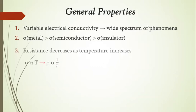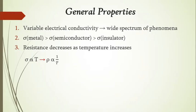The next property is based on resistance. As temperature increases, the resistance of a semiconductor goes on decreasing. Conductivity is directly proportional to temperature, and since resistivity is the reciprocal of conductivity, sigma is inversely proportional to temperature. Resistance decreases as temperature increases, and since R equals rho times L over A, resistance and resistivity follow the same trend in semiconductors.